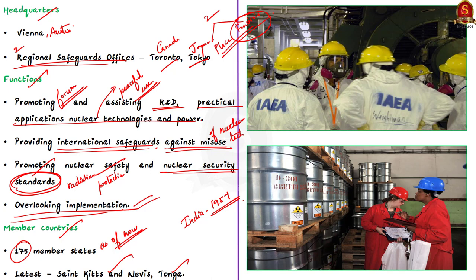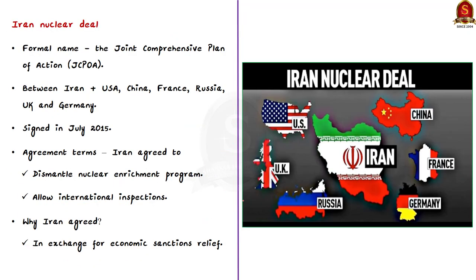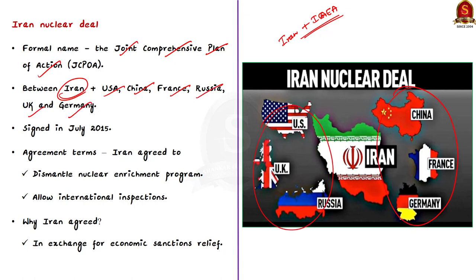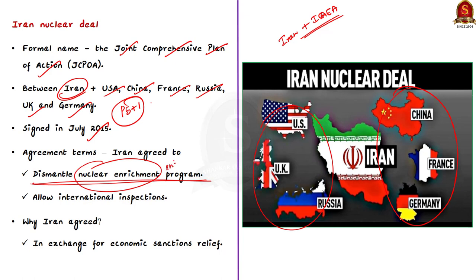Since Iran is involved in the news, let us see some background about the Iran nuclear deal. The Iran nuclear agreement, formally known as the Joint Comprehensive Plan of Action, is a landmark agreement signed between Iran and several world powers: USA, China, France, Russia, United Kingdom and Germany — popularly known as P5 plus 1. This agreement was signed in July 2015.